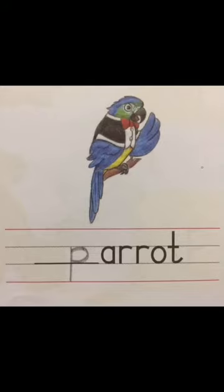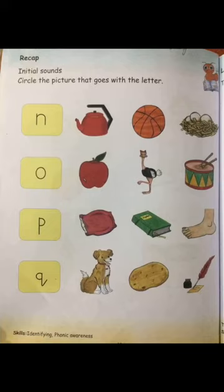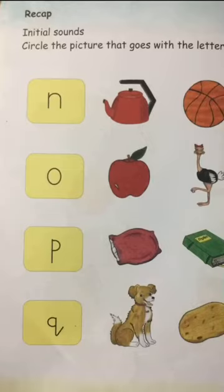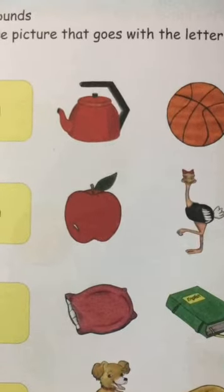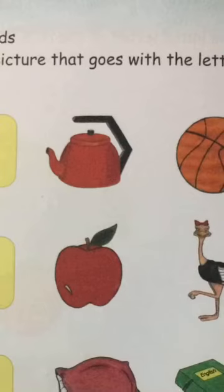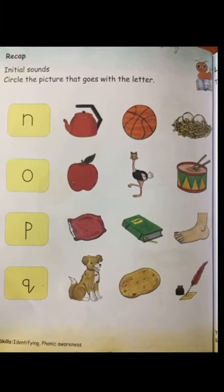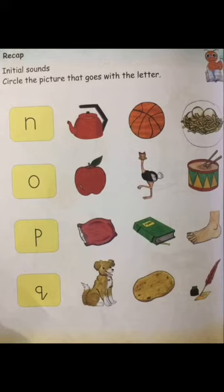Now students, humne yahan par initial letters likh liye hain. Come to page number 12. This is also a revision of the initial sounds. Aapke paas pictures di gayi hain aur word diya gaya hai. The question is: circle the picture that goes with the letter. First letter given is N. N ki sound kya thi? N. Isse banne wala word — nest. So aapne nest par circle kar dena hai. N for nest.